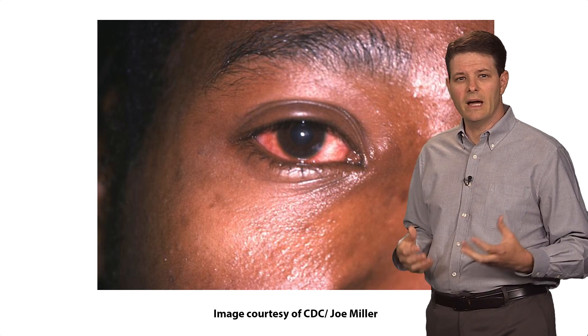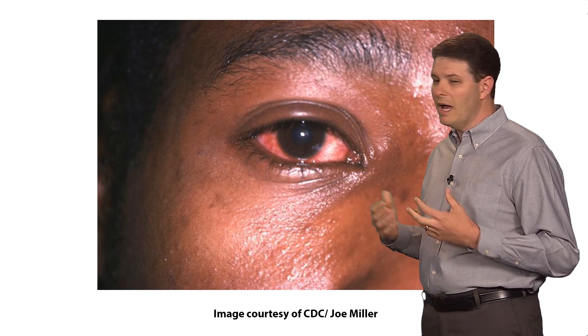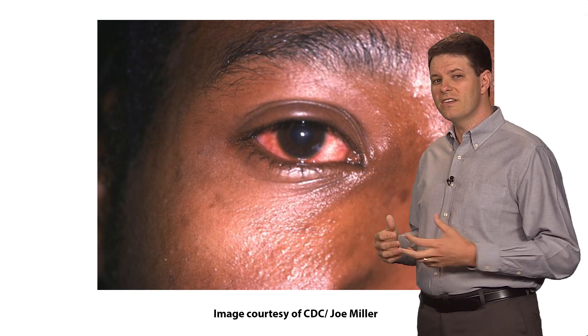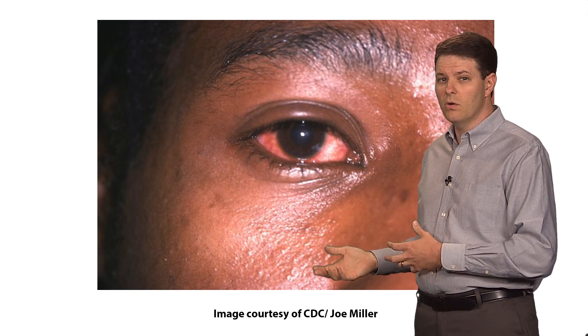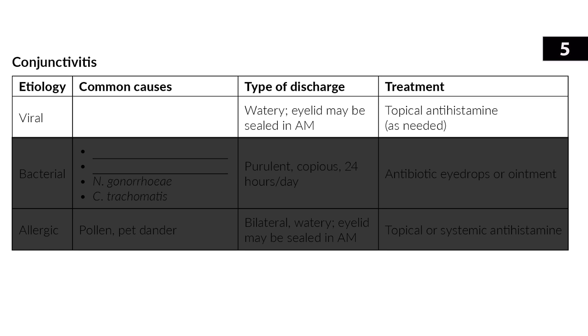Conjunctivitis, commonly known as pink eye, means the conjunctiva is inflamed — not necessarily infected. As the conjunctiva becomes inflamed and blood vessels stand out, the sclera looks pink. The eye may be mildly painful or itchy with watery or purulent discharge. The most common cause of viral conjunctivitis is adenovirus, which is highly contagious and can spread from one eye to the other and person to person. You can treat symptoms with antihistamine eye drops, but no specific treatment is necessary.